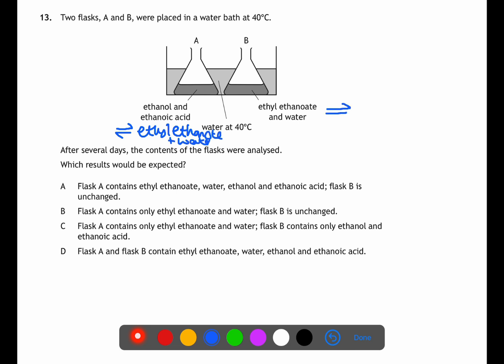In flask B the ethyl ethanoate and water will react in the reverse direction. This means that after a few days both flasks will contain ethanol, ethanoic acid, ethyl ethanoate and water.